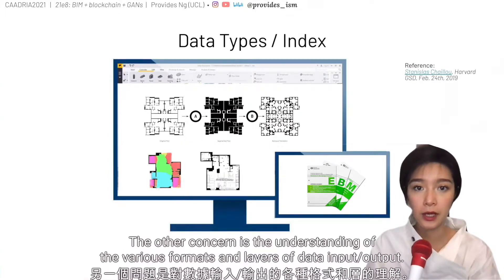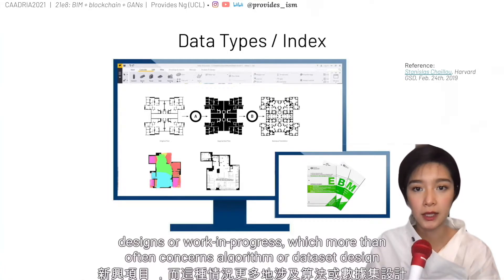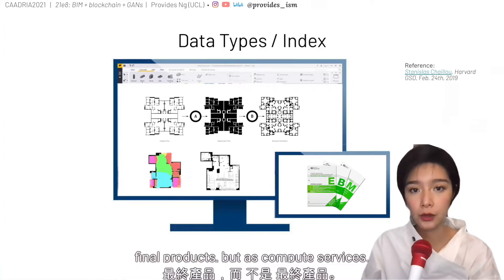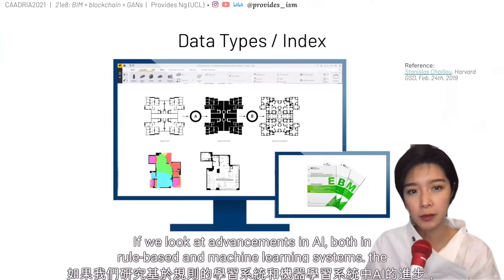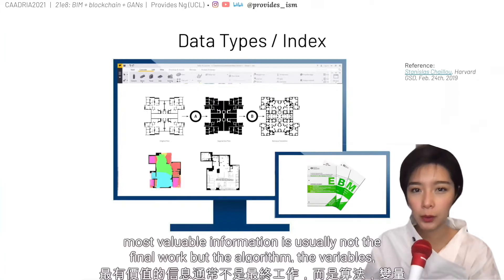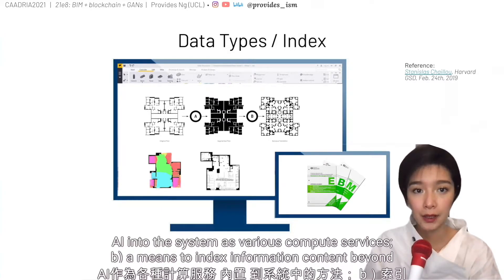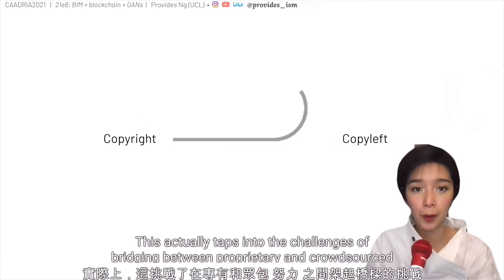The other concern is the understanding of the various formats and layers of data input-output. Construction data types don't usually fit emerging projects with speculative designs or work-in-progress, which more often concerns algorithm or dataset design. Especially in the face of AI, we should perhaps consider architectural information not as final products, but as compute surfaces. Currently, there are no means of indexing data beyond building elements within BIM. In AI systems — both rule-based and machine learning — the most valuable information is usually not in the final work, but the algorithms, the variables, the datasets themselves. If we wish to build AI into BIM systems, we have to figure out how to build AI as various compute surfaces and how to index information content beyond conventional construction data types.